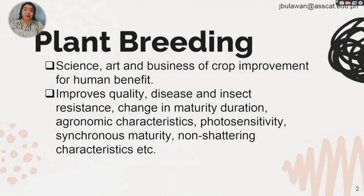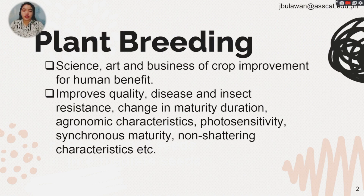So what is plant breeding? It is the science and business of crop improvement for human benefit. It improves not only the quality and quantity, but also disease and insect resistance, change in maturity duration, agronomic characteristics, photosensitivity, synchronous maturity, non-shattering characteristics, and others. So plant breeding will not be done without the plant breeders.